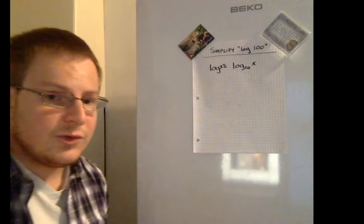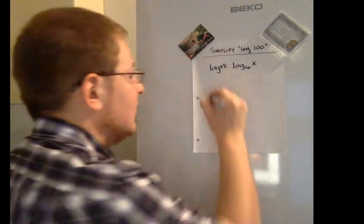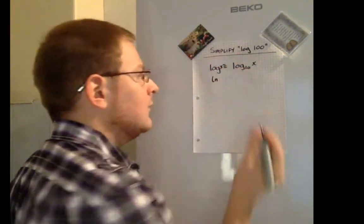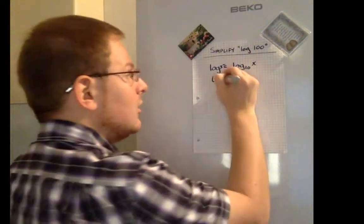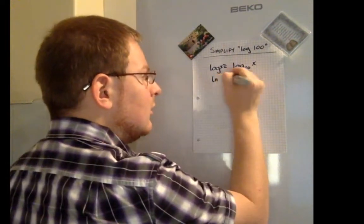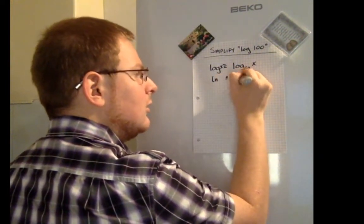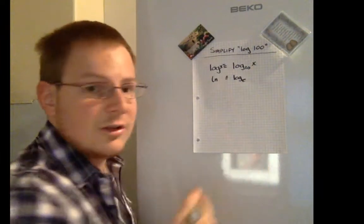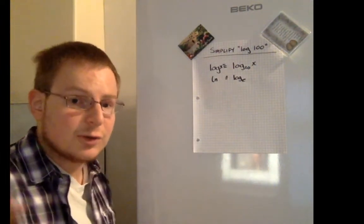Again, if you see an expression like this — L-N — we know this is log to the base E, or log to the base 2.7 or so.